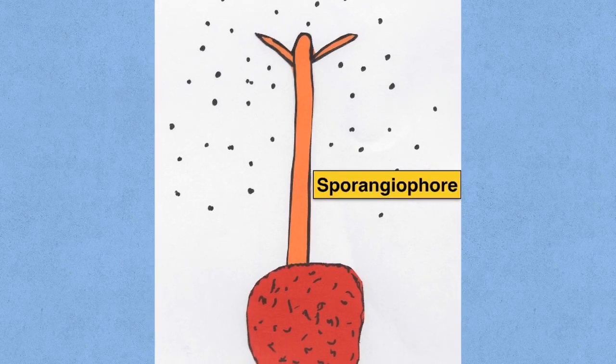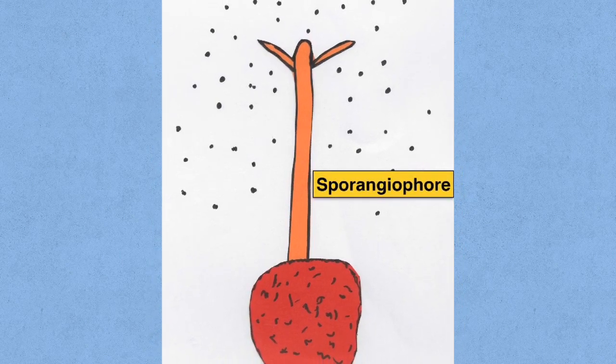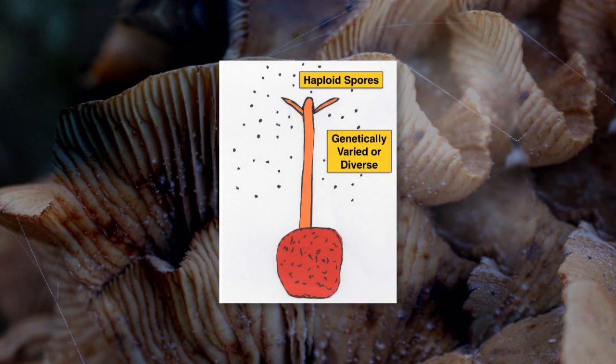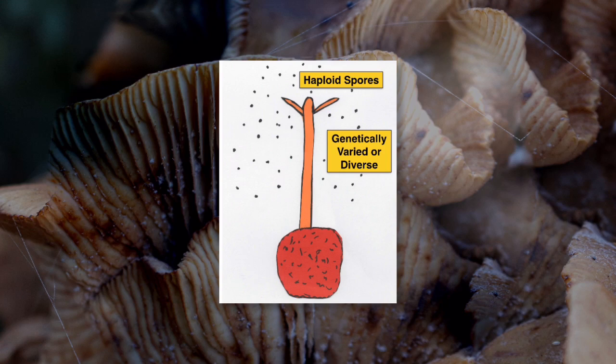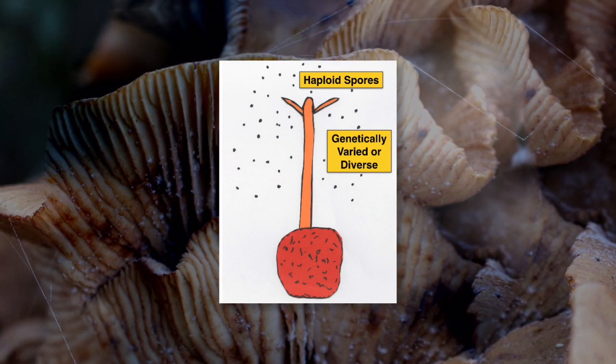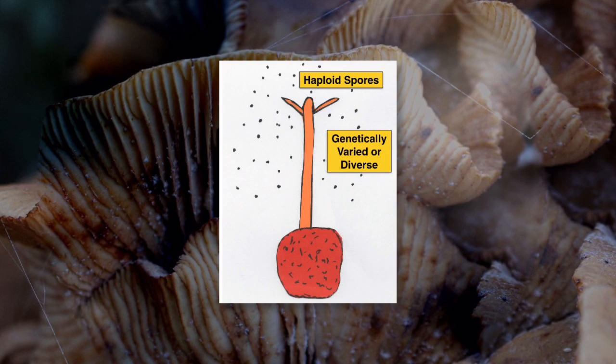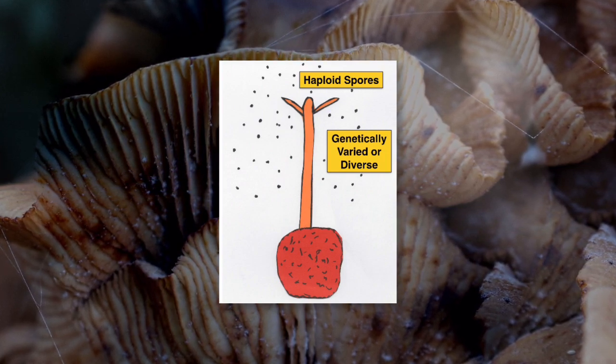So a sporangiophore develops and at the top of this will be your sporangium and inside the sporangium will be these haploid spores. These spores that were produced are genetically varied because they were originally formed by means of sexual reproduction. So as in asexual reproduction they'll get released and if they land in a suitable substrate they'll grow into hypha.